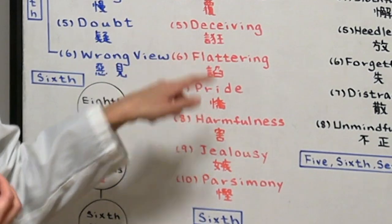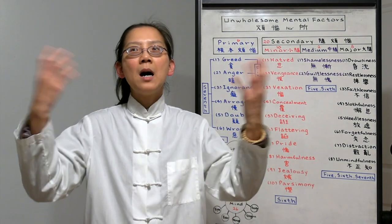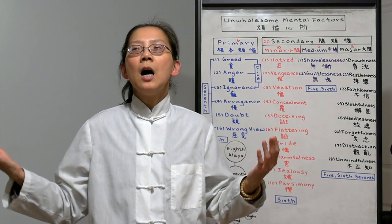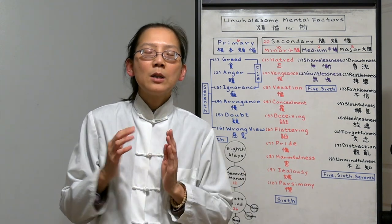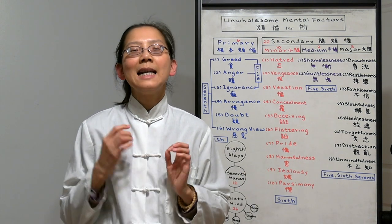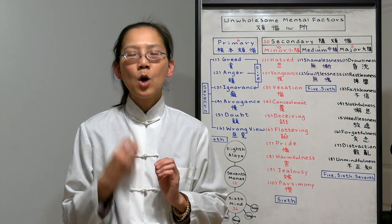Number six is flattering. We might flatter our boss, our superior, our parents. Because we want to gain some benefits. That's all being insincere. That is not a cultivator.